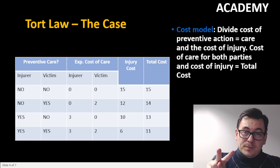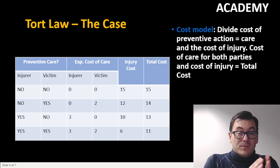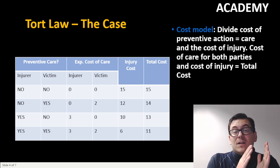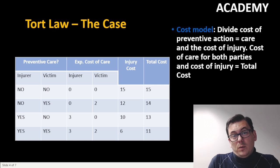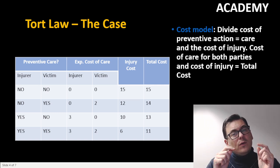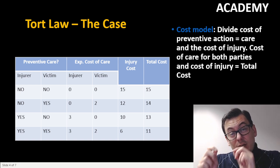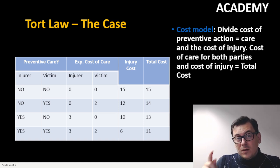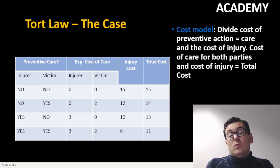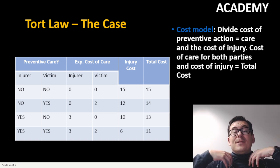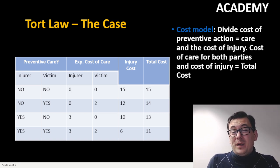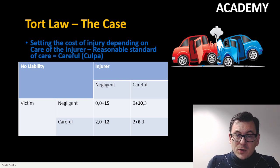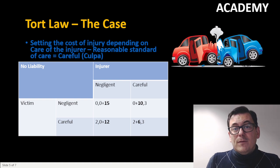Before we go into the actual matrix, we just have to set up this cost model. We have two players: an injurer and a victim. Both of them can choose between being negligent or careful. If they want to be careful, that has a cost — for the injurer it will be a cost of 3, and for the victim a cost of 2. Being careful also reduces the cost of the actual injury: if none of them are careful the injury cost will be 15, and if both of them are careful the injury cost will be 6.